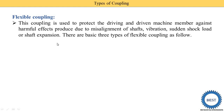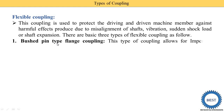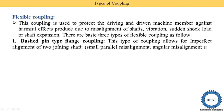There are basically three types of flexible coupling. The first one is a bush pin type flange coupling, which is a modified version of the flange coupling studied in rigid couplings. In this coupling, the bolt is connected using bush pins, and this coupling allows for imperfect alignment of two joining shafts.